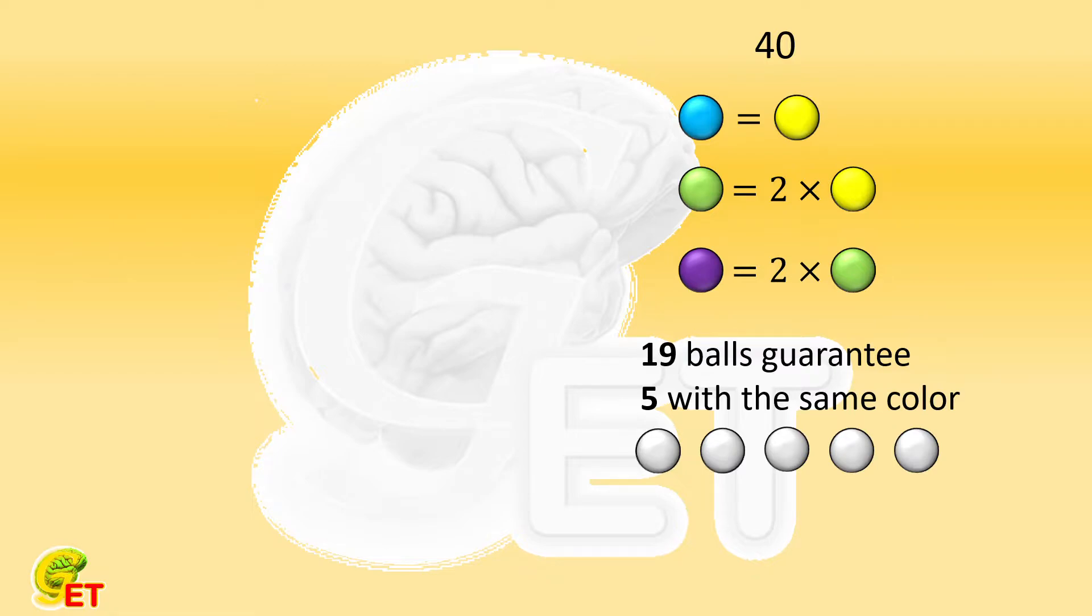Second, the numbers of blue, yellow, green, and purple balls are not independent. Third, 19 balls can guarantee at least 5 with the same color.